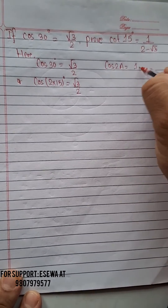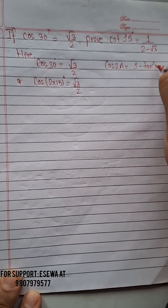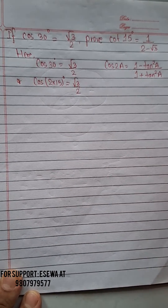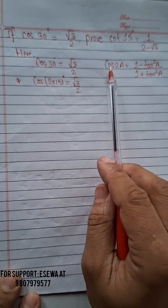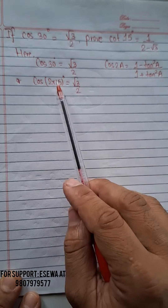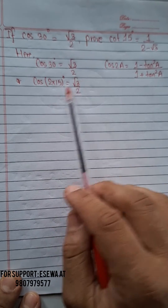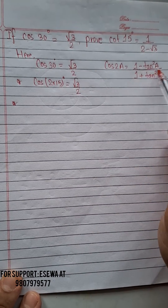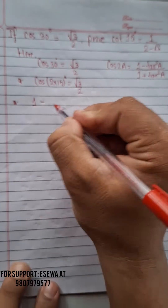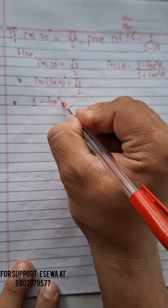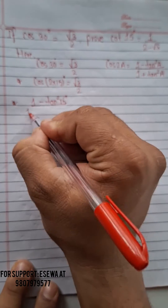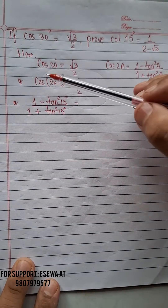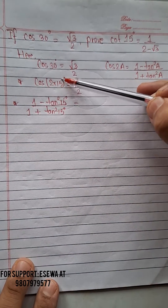We know that cos 2A = (1 - tan²A) / (1 + tan²A). This is the formula for cos 2A. On comparing, cos 2×15° maps to cos 2A, so A is 15°. Therefore we substitute: (1 - tan²15°) / (1 + tan²15°) = √3/2.